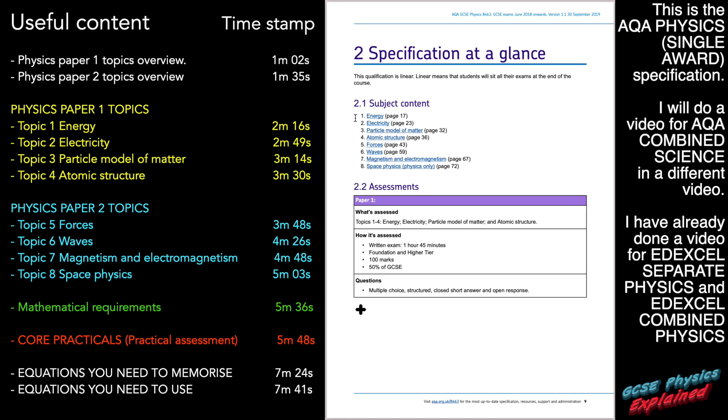If you're studying AQA, then there's eight units that you need to know about. It tells you here that on paper one, you'll be assessed on your knowledge on topics one to four. So that's energy, electricity, particle model of matter, and atomic structure. The paper's one hour and 45 minutes. I've got a lot of work throughs on my channel. If you want to check them out, they'll be helpful for you. And this paper one is 50% of your overall grade.